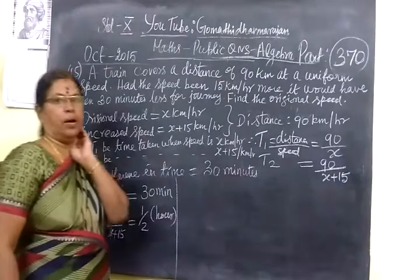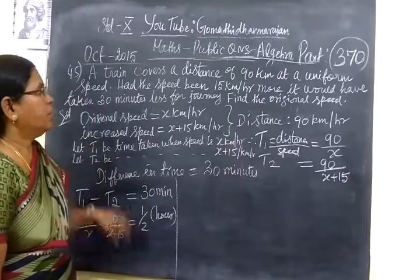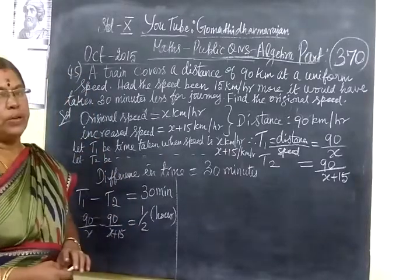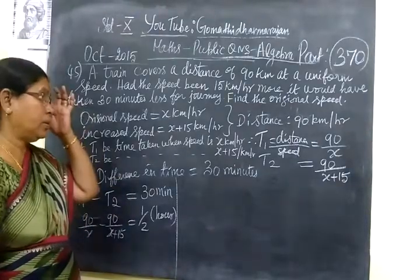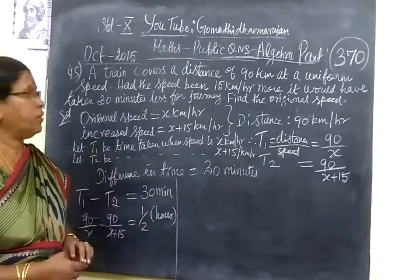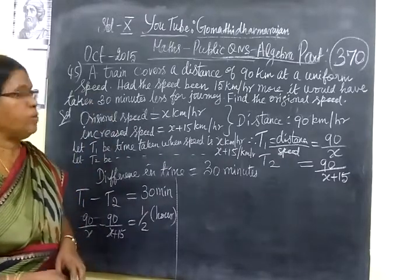So, now we will see part 370 in algebra published in October 2015. In the last class, we have seen 369, 5 or 6 parts from the algebra. Now, we will see question number 45.